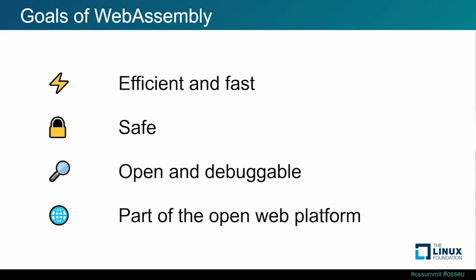In some parts of WebAssembly, they try to even increase safety and security. The third goal is being open and debuggable — enabling developers to build complicated applications with WebAssembly, but also have room to experiment, grow, and evolve the specification. The last goal is being part of the open web platform: not just executing code in a VM, but interacting with its environment, interfacing with JavaScript APIs and browser capabilities.